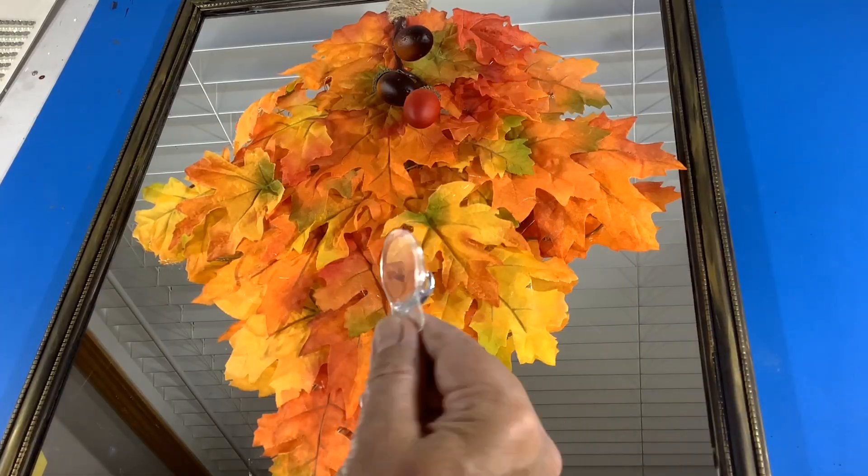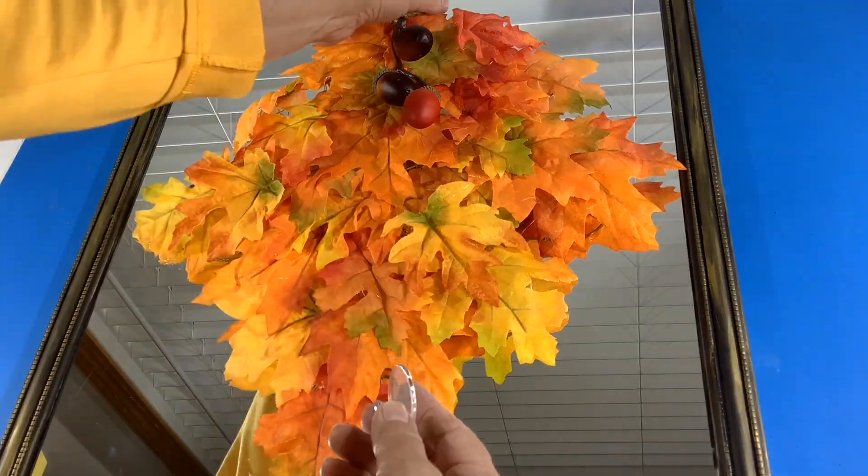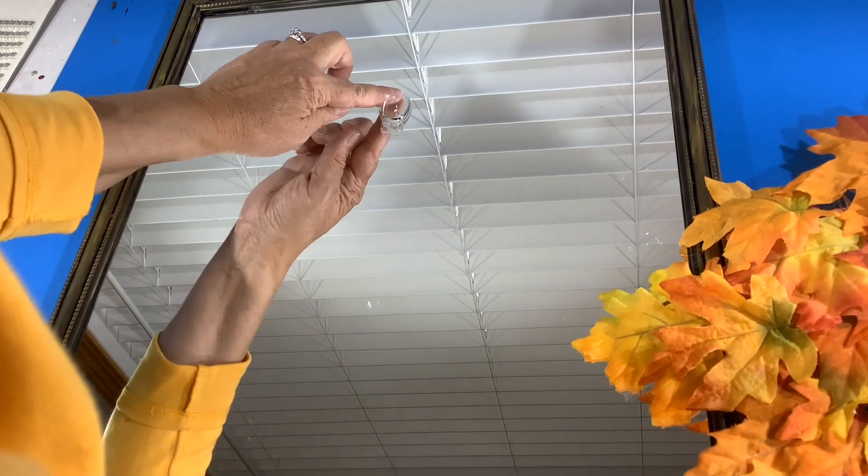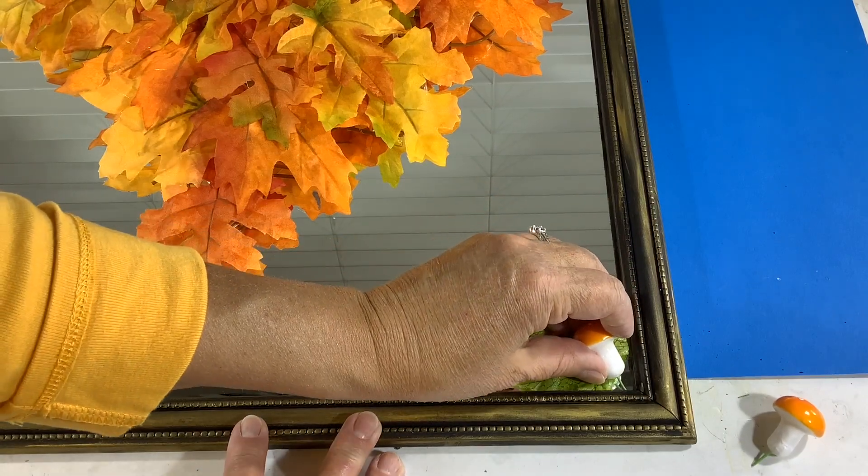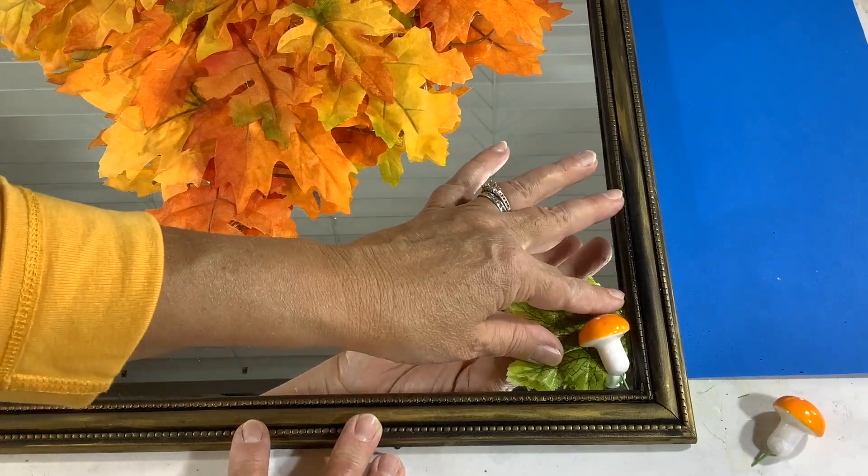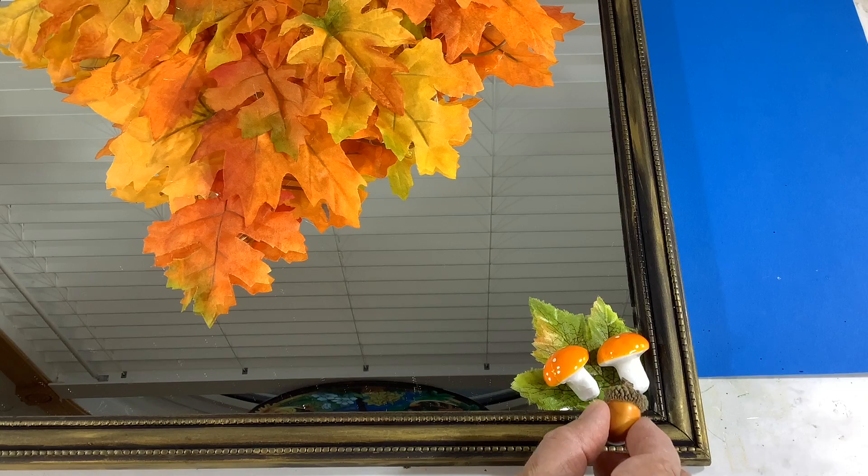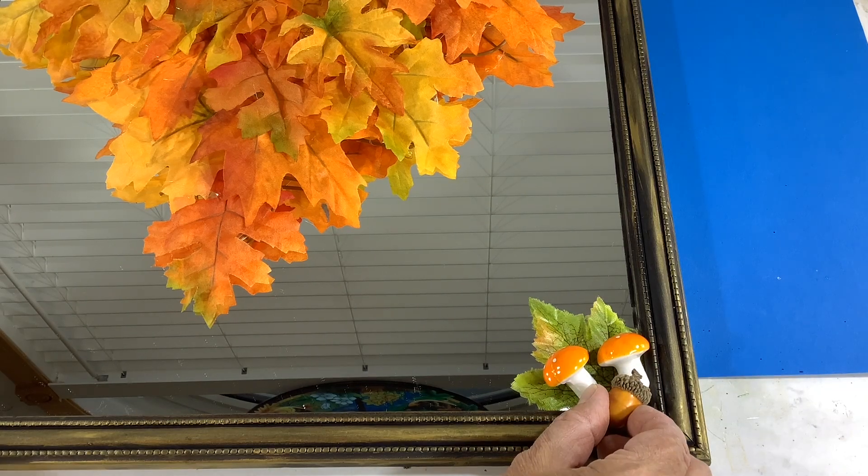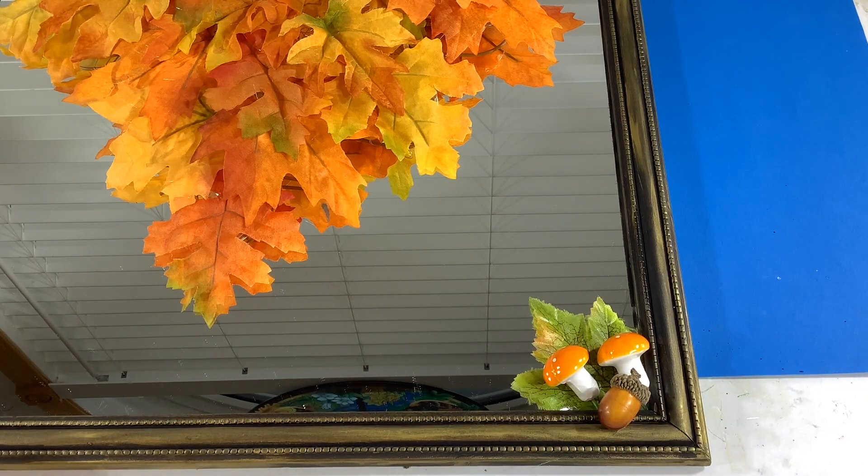And next all I do is add a command hook. It's just the easiest way to attach it. I have loops in the back already. And inside it needs a little something something. So I'm going to add a green leaf, a couple little orange mushrooms, and a cute little acorn.